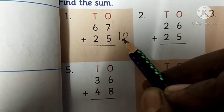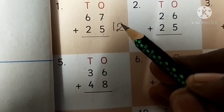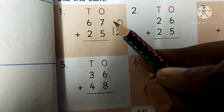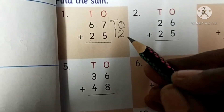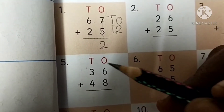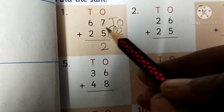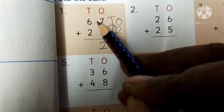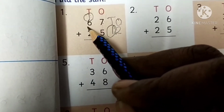Write 12. In 12, how many ones are there? 2 ones. How many tens are there? 1 ten. Place the digit 2 under the ones column. Carry the digit 1 over the tens column. Write 1. Do you know children? 6 plus 1 is 7.